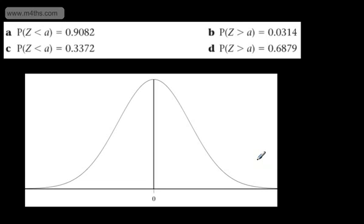In all of the videos so far, we've been looking at finding the probability that Z, which is a continuous random variable, is less than some observed value. In the next few videos, we're going to be working backwards. In the first part of this question, it says the probability that Z is less than A is equal to 0.9082. So this time, we're being given the probability, or the area trapped under the curve, and we need to find the value of A.